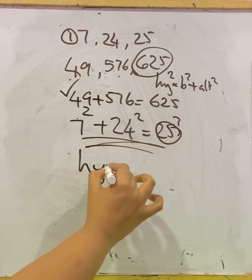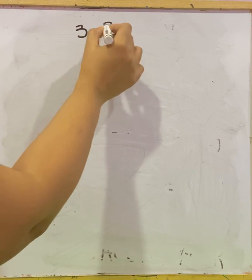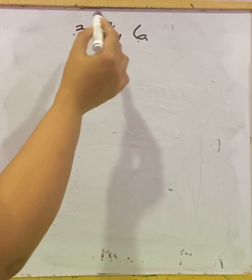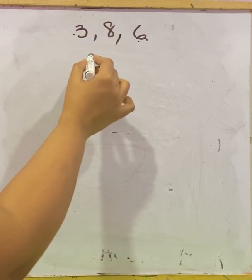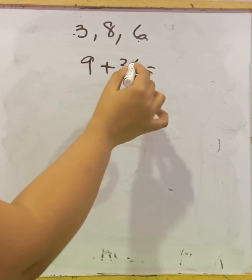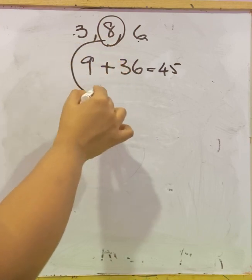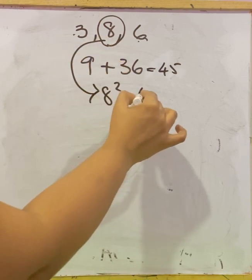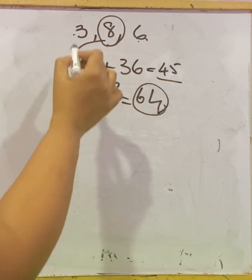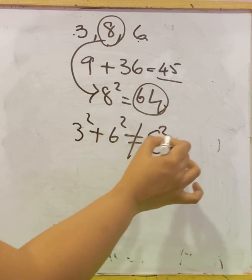Second question: 3 cm, 8 cm, 6 cm. The smaller values are 3 and 6. Finding their squares: 3² + 6² = 9 + 36 = 45. The greatest number is 8, and 8² = 64. Since 45 ≠ 64, that is 3² + 6² ≠ 8², this is not a right triangle.